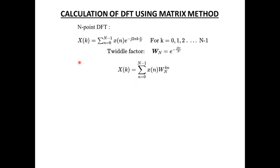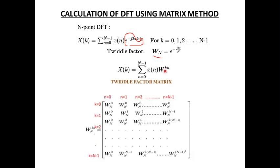You know that the N-point DFT is specified in this particular equation. Here, the factor e^(−j2π/N) is taken and represented as a twiddle factor called Wn. Rewriting this equation: summation n=0 to N−1 of x(n) · Wn^(kn). We are going to calculate the twiddle factor matrix from this Wn.